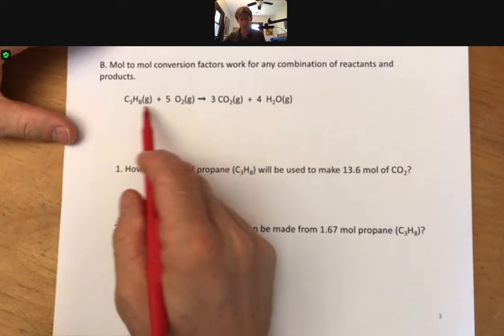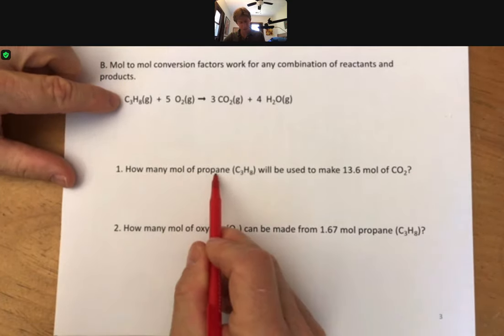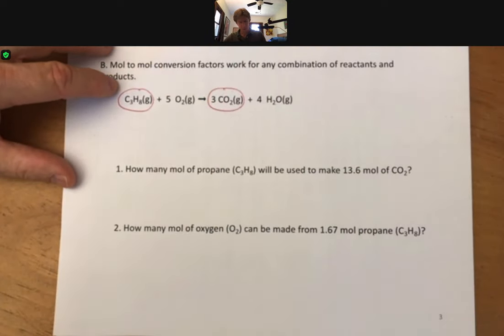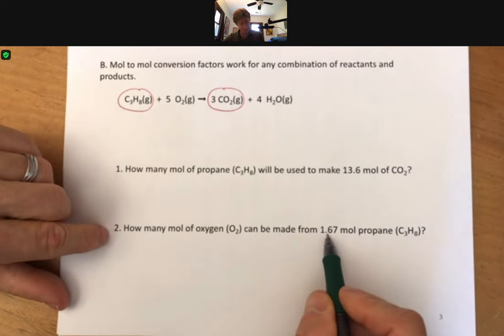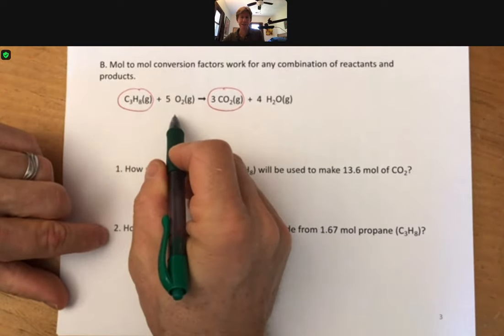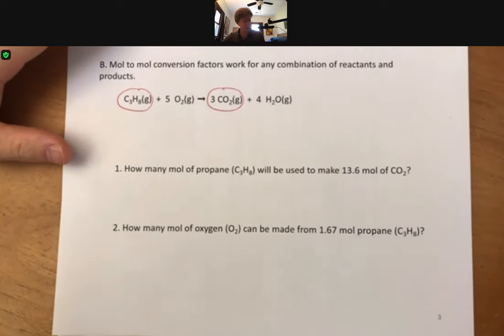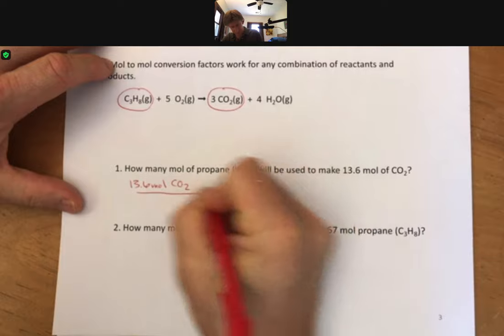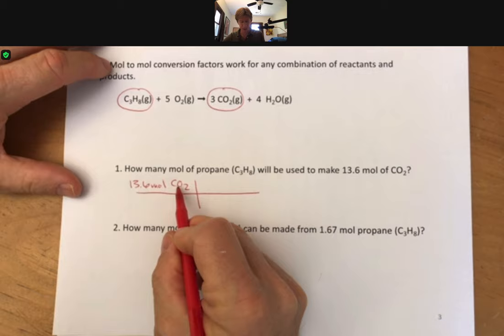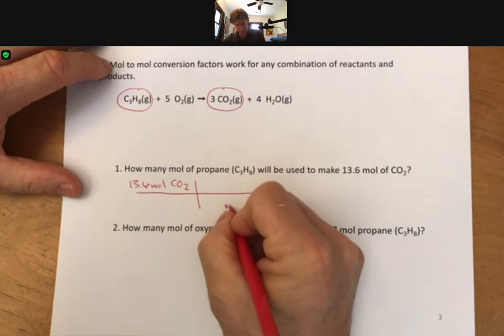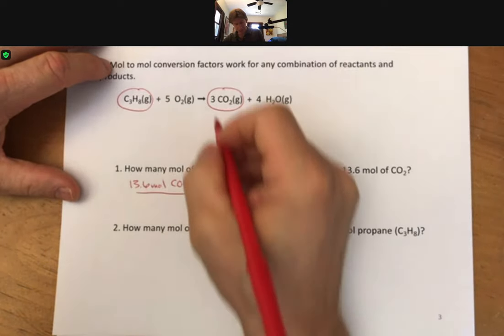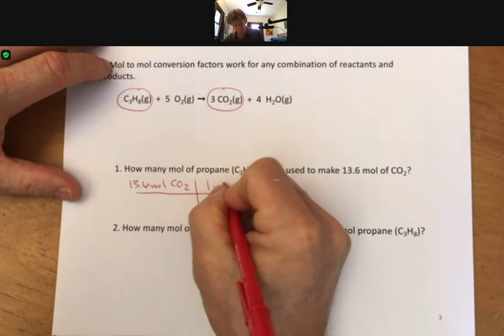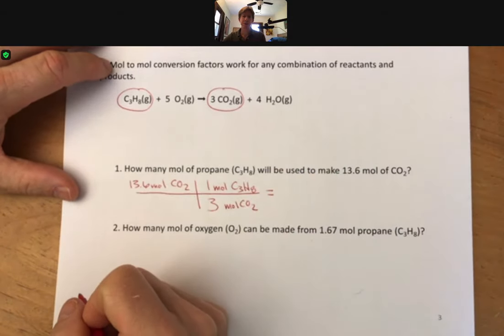mole-to-mole conversions work for any combination of reactants and products. We've got a different reaction here. This is the combustion of propane, C3H8. And this time, it says how many moles of propane will be used to make 13.6 moles of carbon dioxide. That's going to be propane and carbon dioxide. We've also got how many moles of oxygen can be made from 1.67 moles of propane. Those are both going to be our reactants. It's the same process. You need to get your mole-to-mole conversion. Start with your given, 13.6 moles. Use your mole-to-mole conversion factor. I know that I've got moles of carbon dioxide on the top, so I know that I need moles of carbon dioxide on the bottom. And my coefficient is 3 for propane. I've got a 1 mole of propane. And I want you to go ahead and set that up and solve it.